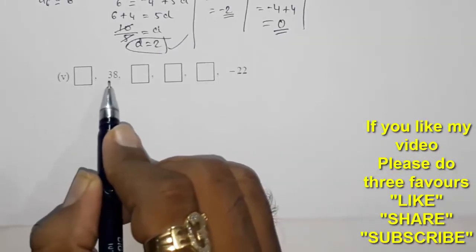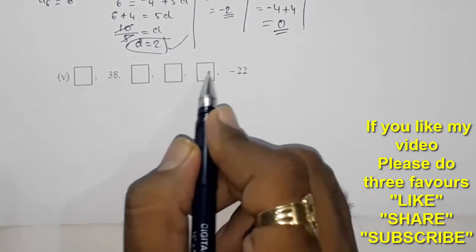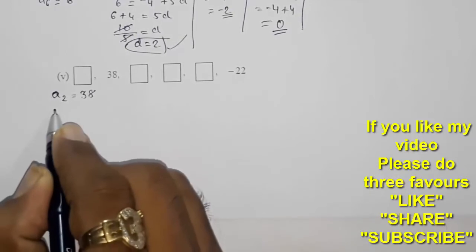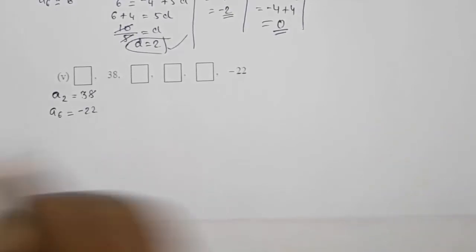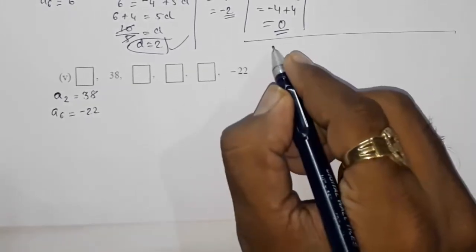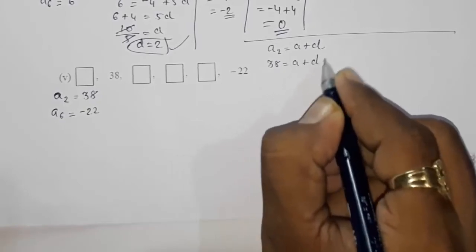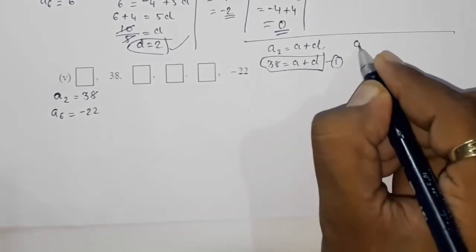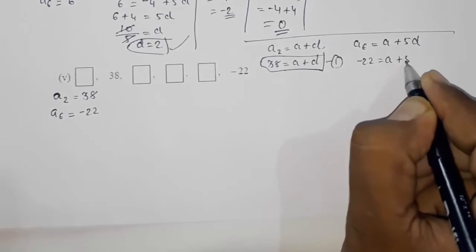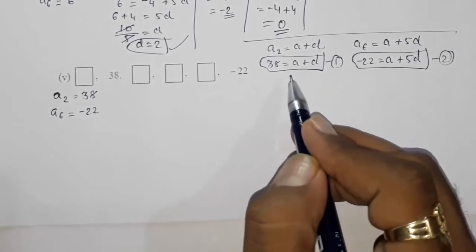In part five, the first term is not given. They have given a2 = 38 and a6 = −22, and we need to find a3, a4, and a5. From a2: a + d = 38 — equation 1. From a6: a + 5d = −22 — equation 2.